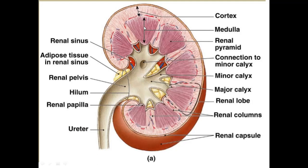This is the outer cortex and this is the medulla. The triangular structures inside are called renal pyramids. The renal pyramids connect to the minor calyx, and these minor calyces join to form the major calyx. The extensions of cortex between the pyramids are called renal columns. The outermost covering is the renal capsule. On the inner side, there is a renal sinus containing yellow adipose tissue, and the renal pelvis is formed by the joining of the major calyces.